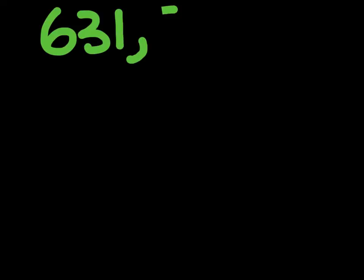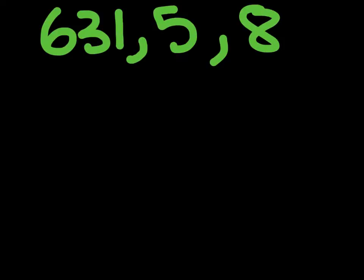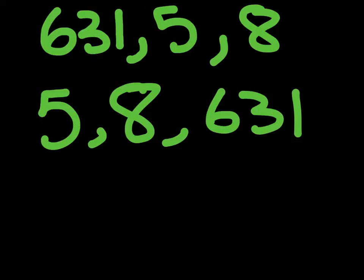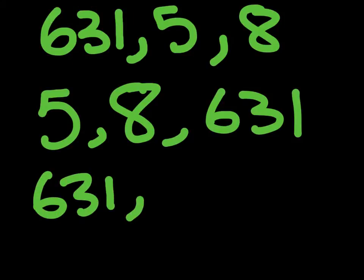The second order was 631, 5, and 8. To put this in least to greatest, the lowest number would be 5, so 5 would be first. Then the second lowest number would be 8, so 8 would be second. And then the highest number, also the third lowest, would be 631. To put it into greatest to least form, you would have 631 first because it is the highest number. Then 8 because it is the second highest number. And then 5 because it is the lowest and third highest number.